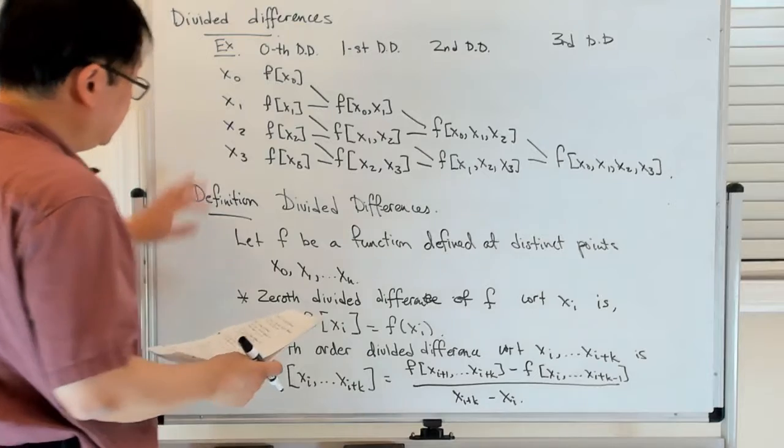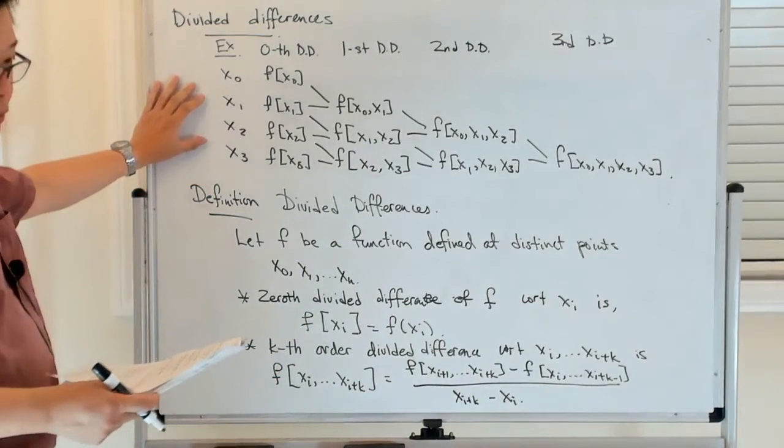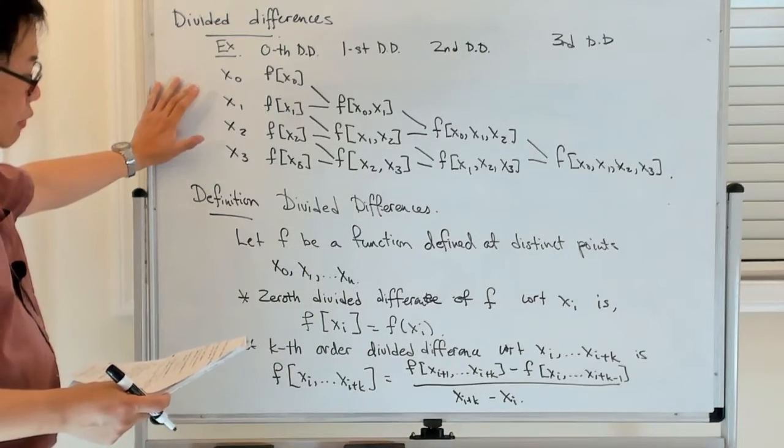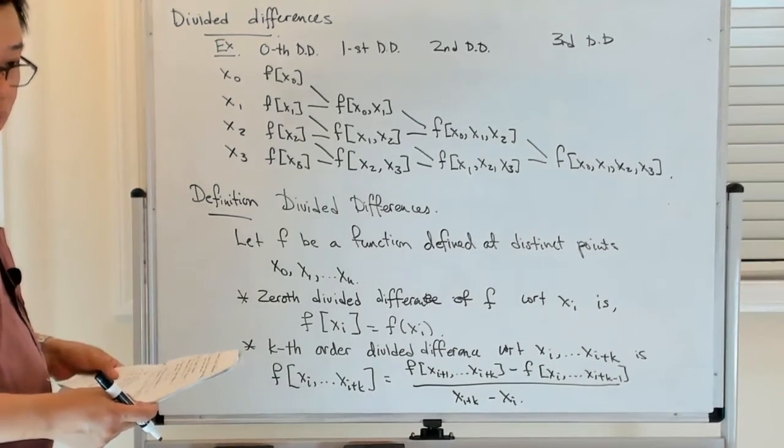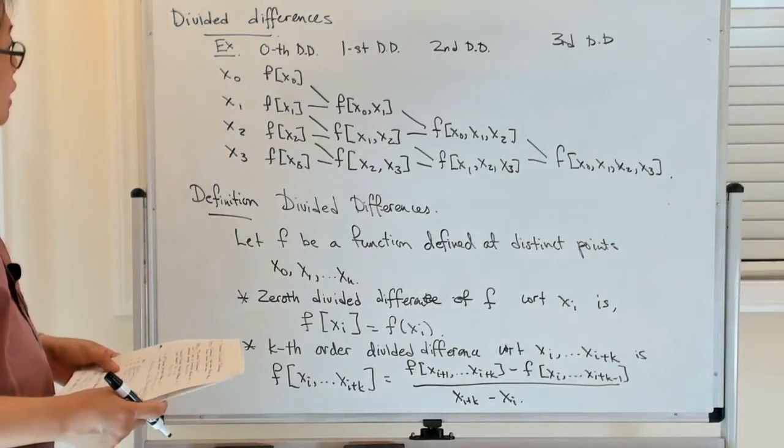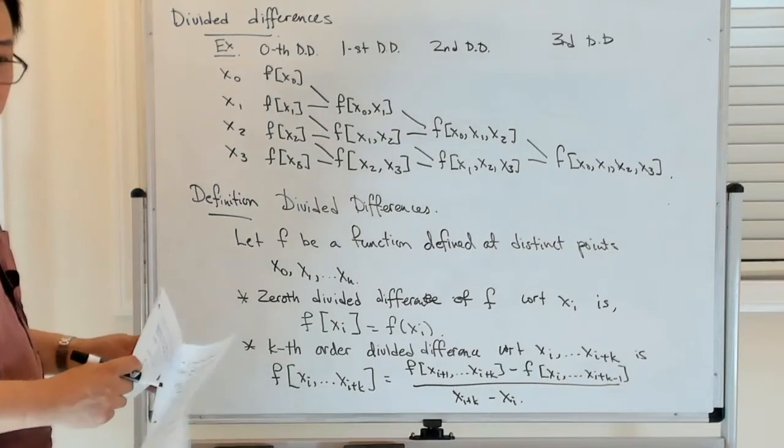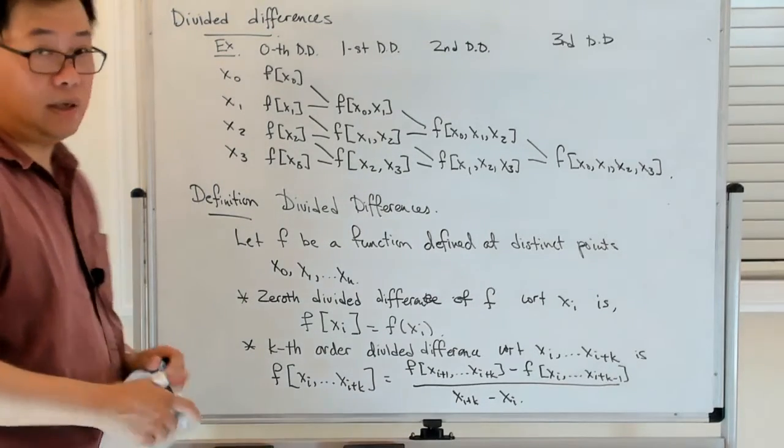So let me just stop here for now. The next thing we'll do is to write down the algorithm for divided differences and then we'll say how that's connected to the coefficients in the Newton form of the interpolated polynomial.